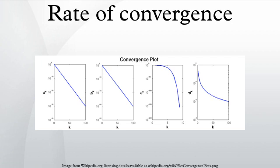This is sometimes called Q-linear convergence, Q-quadratic convergence, etc., to distinguish it from the definition below. The Q stands for quotient, because the definition uses the quotient between two successive terms.